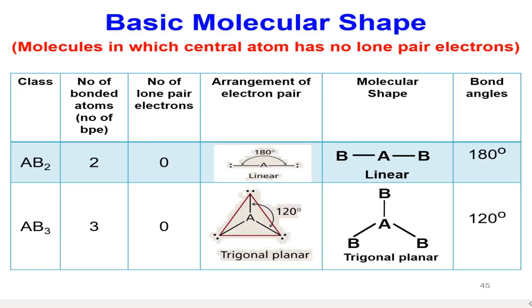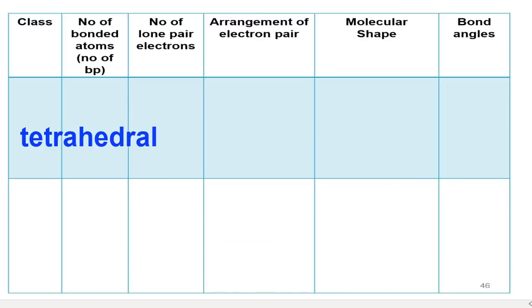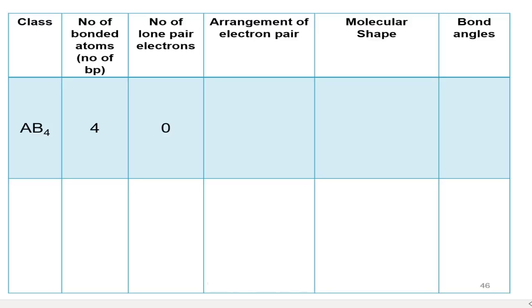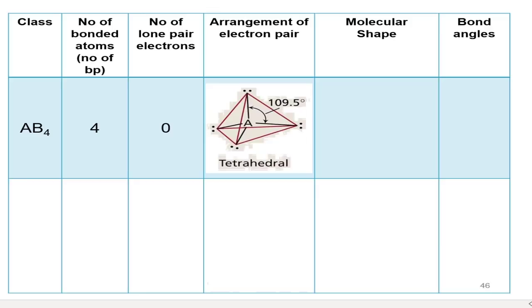The next shape is tetrahedral. The class is AB4, meaning there are four electron pairs around the central atom. They are arranged as far apart as possible to minimize repulsions, so the bond angle in tetrahedral is 109.5°.